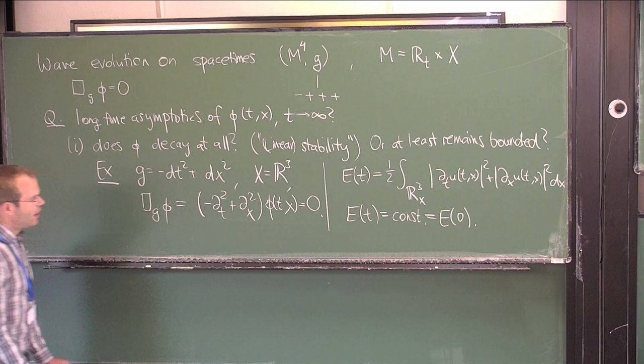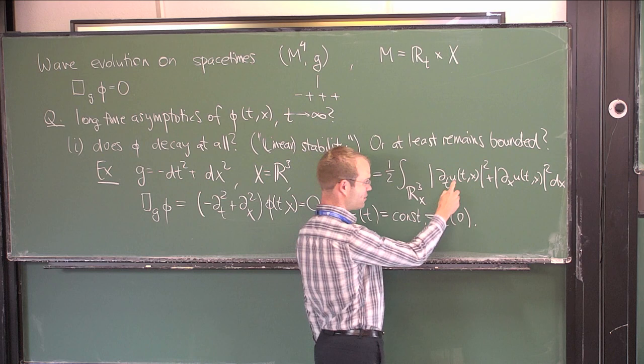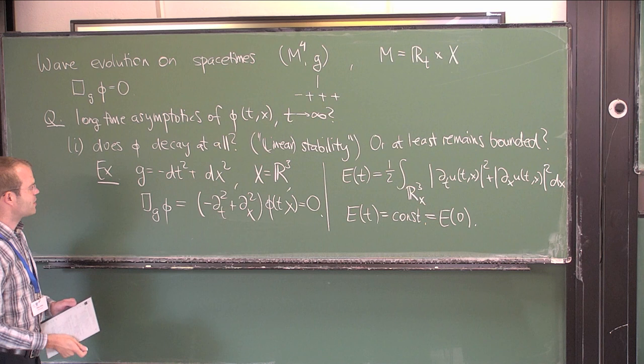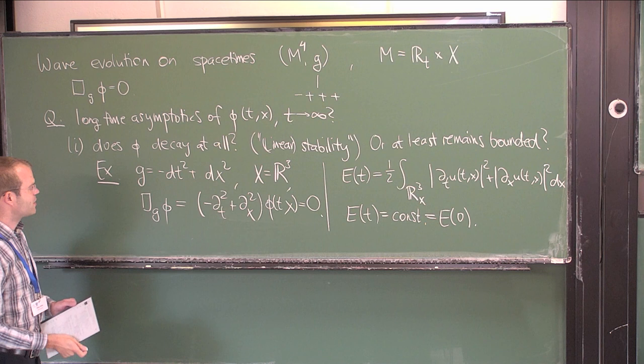This energy is a conserved quantity, so E(t) is constant and in particular equal to the energy of the initial data. Just from the existence of this conserved quantity, which moreover is coercive and controls at least the derivatives of φ, you immediately see that in a certain Sobolev space sense the solution will definitely remain bounded for all time.